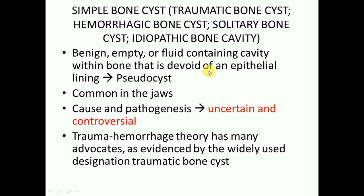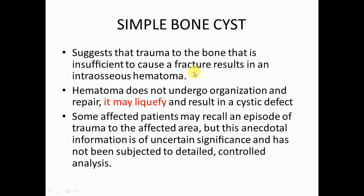It is common in the jaws. The cause and pathogenesis are uncertain and controversial. The trauma-hemorrhagic theory is widely used, as evidenced by the designation traumatic bone cyst. It suggests that trauma to the bone, insufficient to cause a fracture, results in an intraosseous hematoma. The hematoma does not undergo organization and repair, and may liquefy resulting in a cystic defect. Some patients may recall an episode of trauma, but this is of uncertain significance.